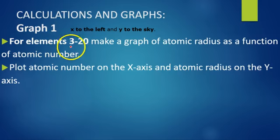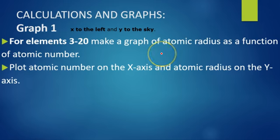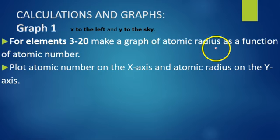There are going to be four different graphs. You should have already downloaded the graph paper you are going to use to create the graphs. If you did not, you can use your own graph paper, print one off the internet, or download one onto your computer. For graph number one, you're going to graph elements 3 through 20, plotting atomic radius as a function of atomic number — only elements 3 through 20.